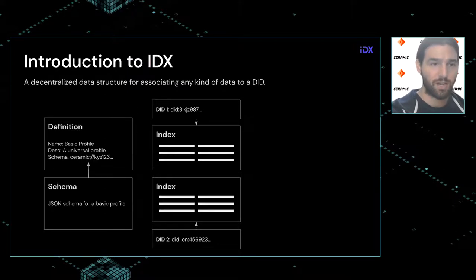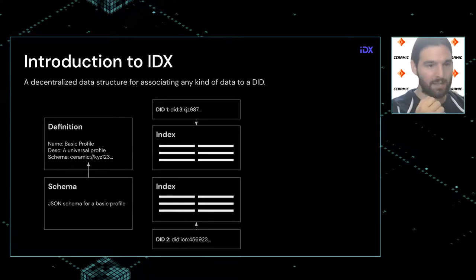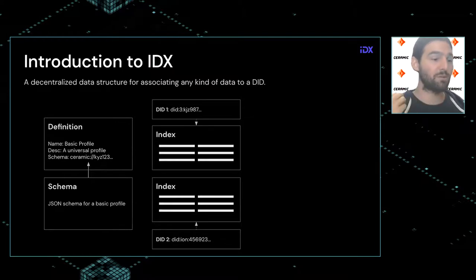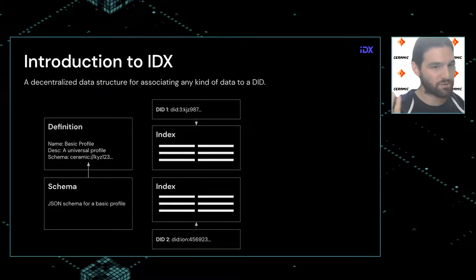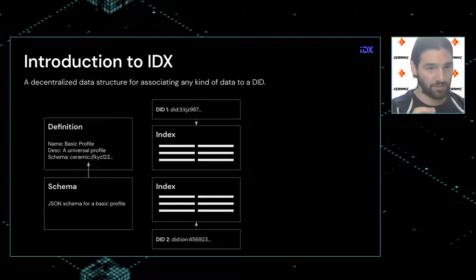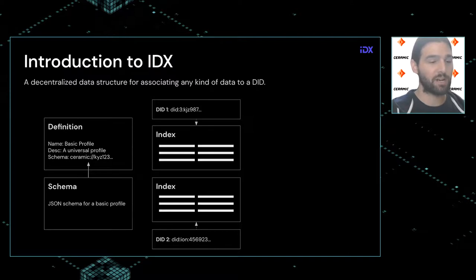Here you see two users. A developer creates a schema, publishes it to Ceramic in a tile, takes that Ceramic stream ID, plugs it into a definition, and deploys that definition on Ceramic as a tile. The definition is the semantic description of a resource — it has some metadata, like a basic profile with a description and a schema. The stream ID of this definition serves as a key in the index. A developer only needs to create a definition once and can use it for N number of users.